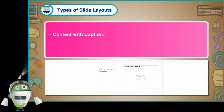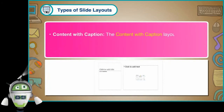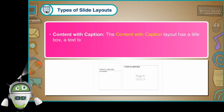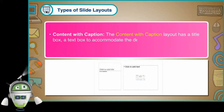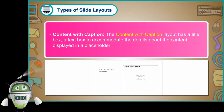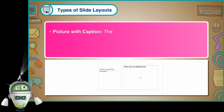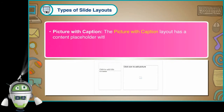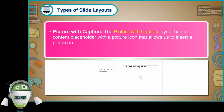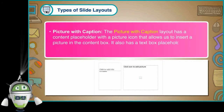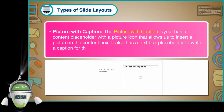The blank layout lets us add text or content and customize it as per our requirement. The Content with Caption layout has a title box and a text box to accommodate details about the content, along with a content placeholder. The Picture with Caption layout has a content placeholder with a picture icon that allows us to insert a picture, and a text box placeholder to write a caption for the picture.